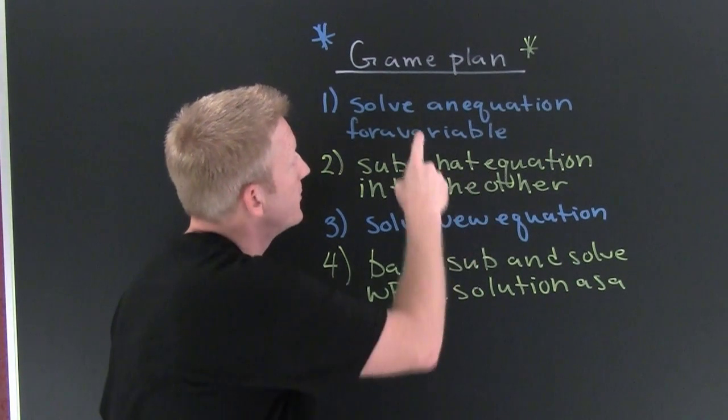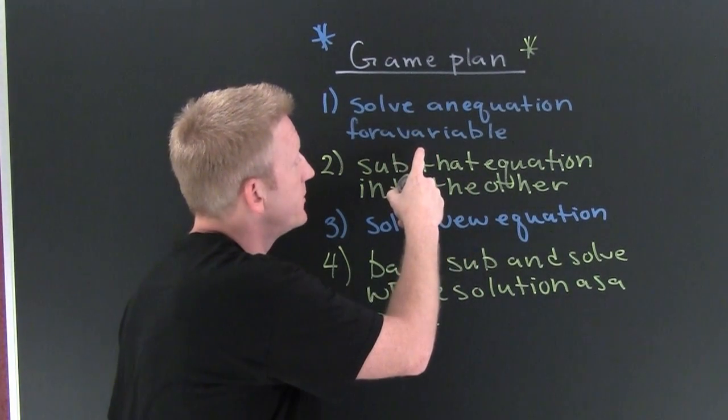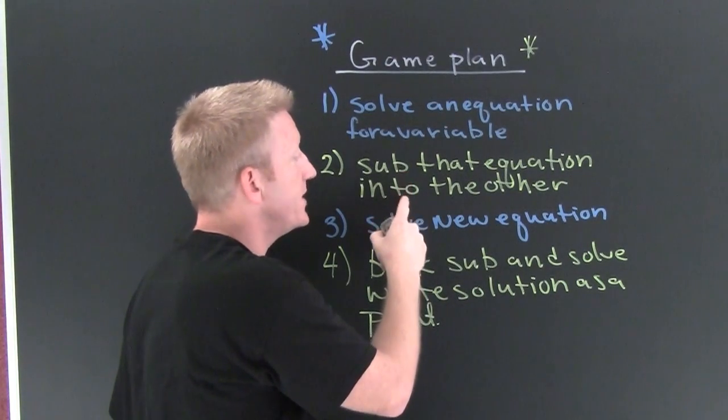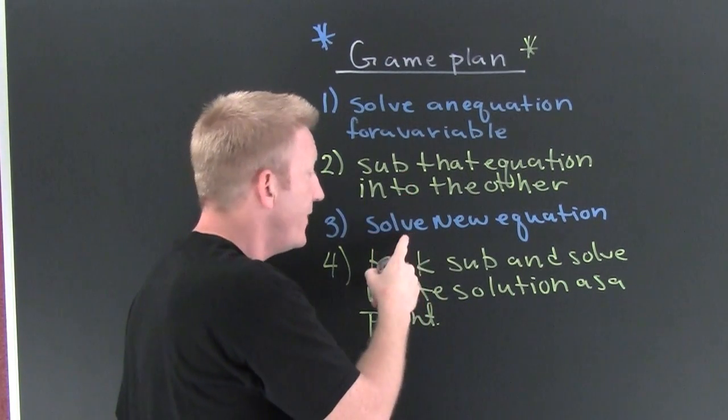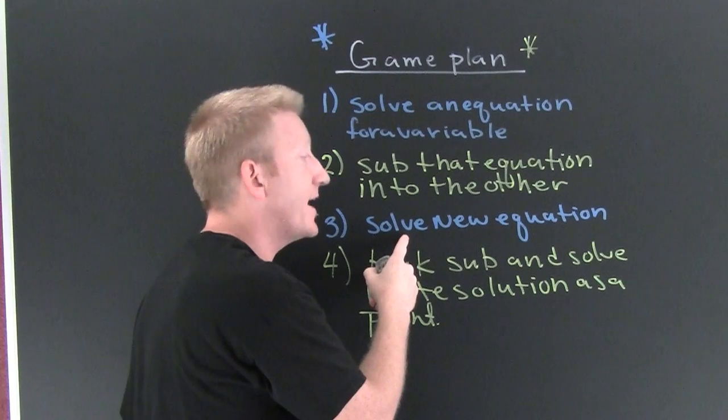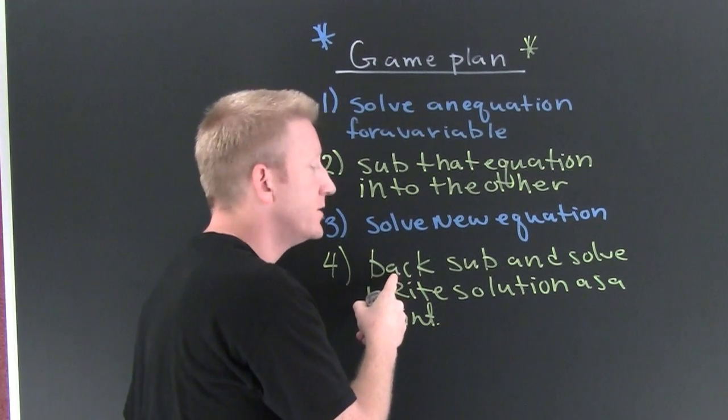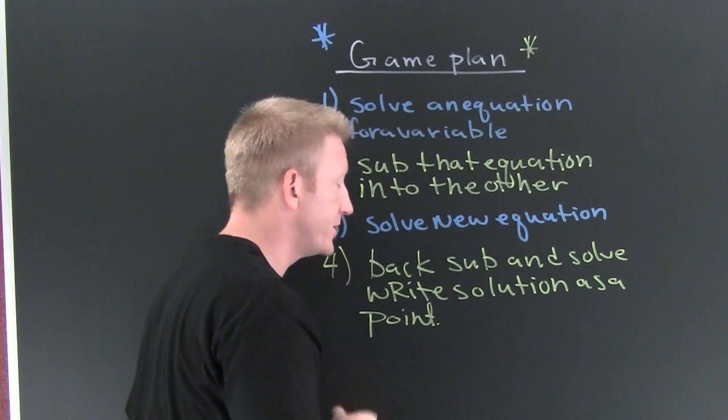First we're gonna solve an equation for a variable, then we're gonna substitute that equation into the other equation, then we're gonna solve that new equation, back substitute our results, and write the solution as a point.